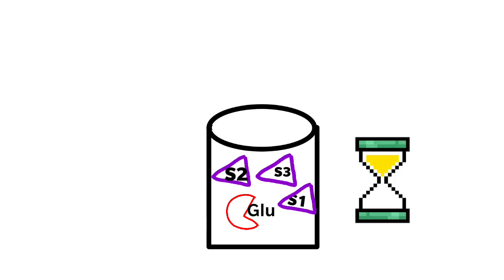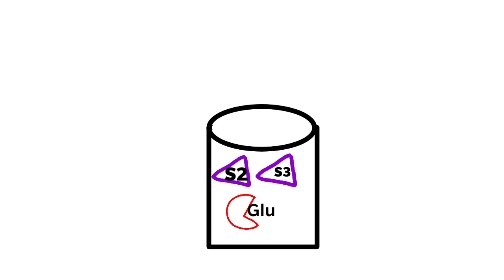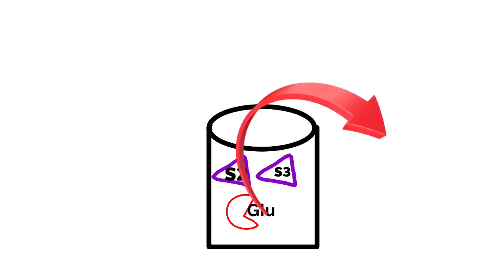After some time, when you observe, ten molecules of substrate one have disappeared. This is because the enzyme is specific to the substrate which has only one hydroxyl group, which forms a hydrogen bond with the glutamic acid at the active site. So substrate one only can bind with the enzyme, and that is why it disappeared.